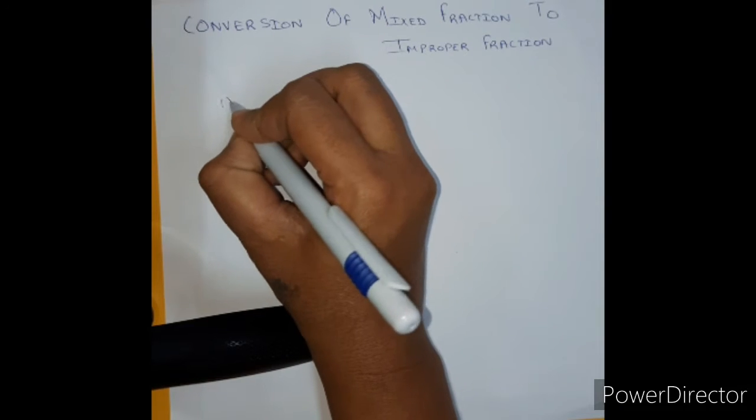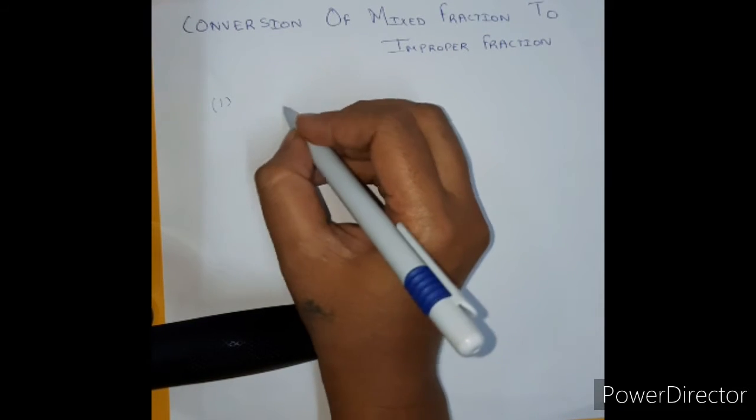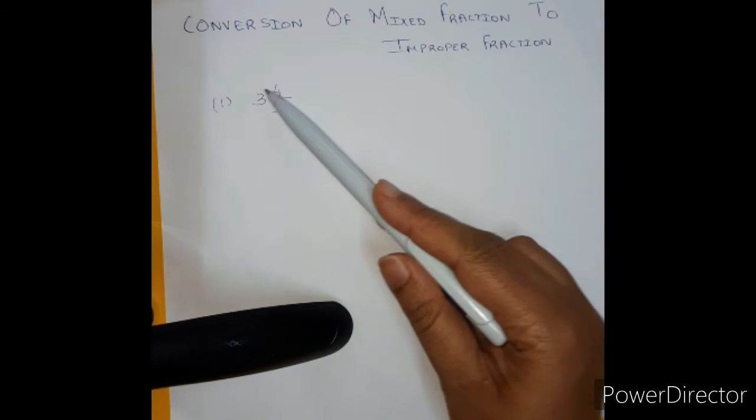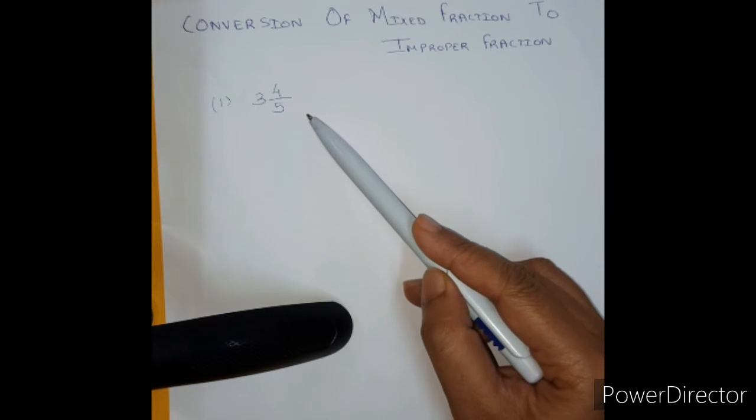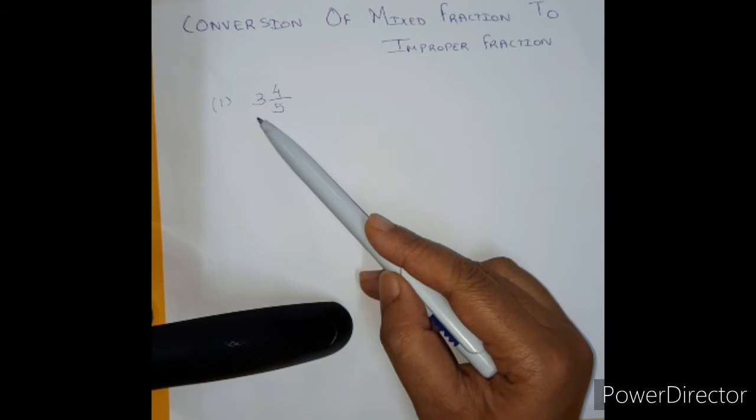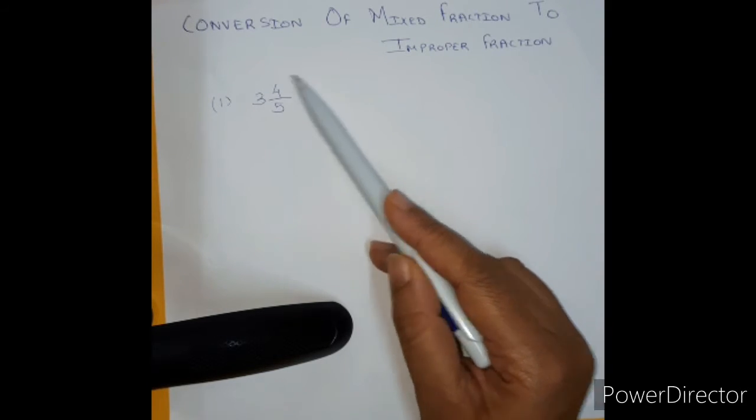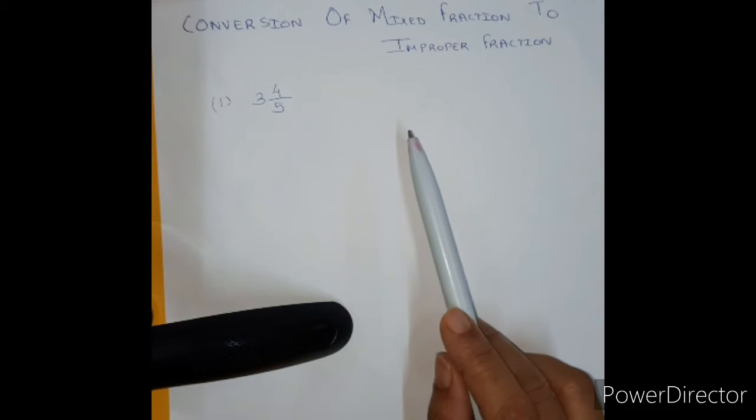So let us take one example. 3, 4 upon 5, 3 and 4 upon 5 or 3, 4 divided by 5. This whole thing together is a mixed fraction.